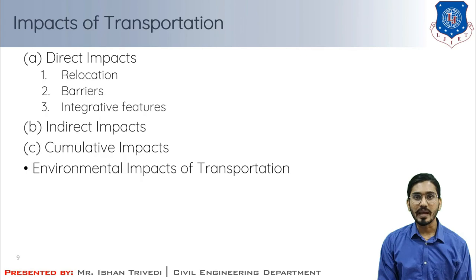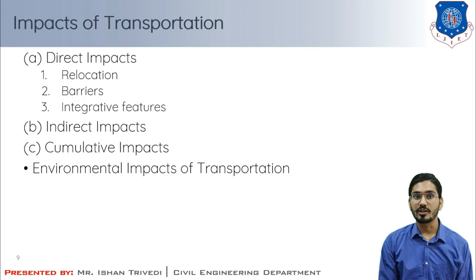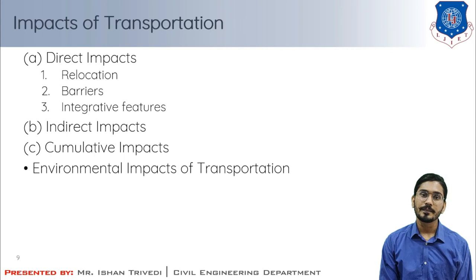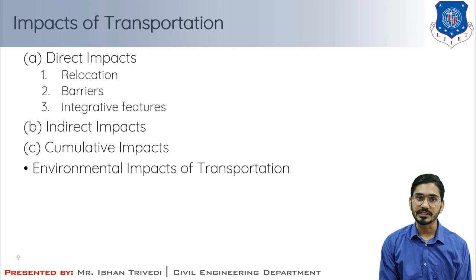Regarding barriers, roads and rail tracks can affect the structure, function, and social pattern of surrounding neighborhoods. Physical and psychological barriers affect the elderly, young residents, and those who travel on foot or by bicycle, leading to isolation of community facilities, services, and institutions. Integrative features, by contrast, include pedestrian walkways, bikeways, and other such facilities.